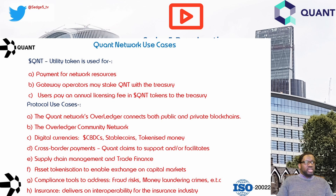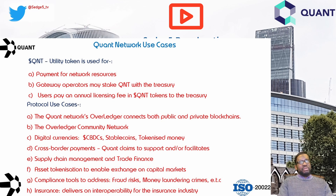Protocol use cases include Quant Network's Overledger, which connects both public and private blockchains, helping make distributed ledger technology more accessible for mainstream enterprise developers. Other use cases include the Overledger community network as a production testbed, digital currencies including central bank digital currency issuance, commercial stablecoin issuance, tokenized money, cross-border payments, stablecoin payment acceptance, micro payments, supply chain management and trade finance, asset tokenization for capital markets exchange, compliance tools to address fraud, money laundering, proceeds of crime, tax evasion prevention, and insurance interoperability.